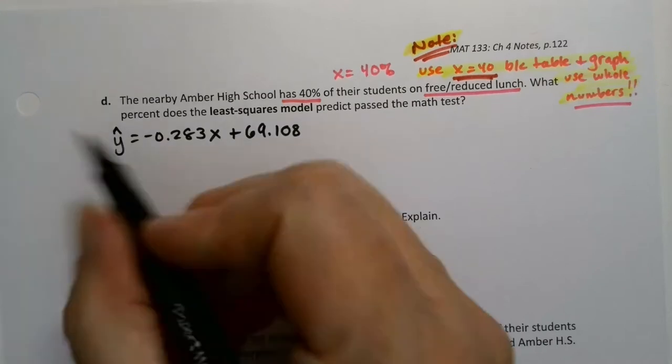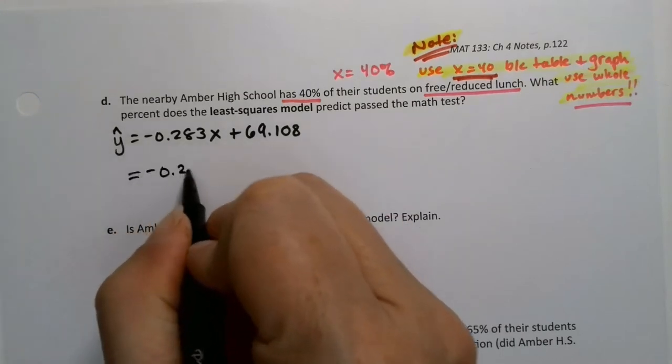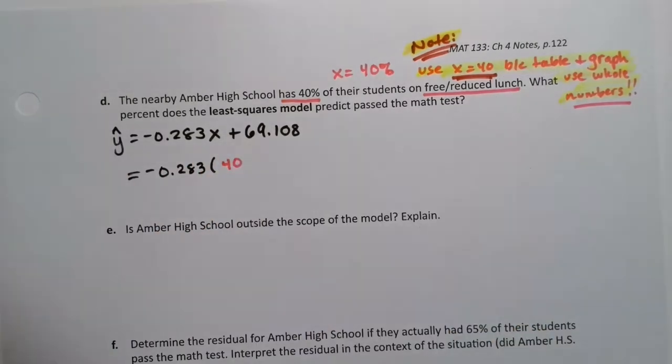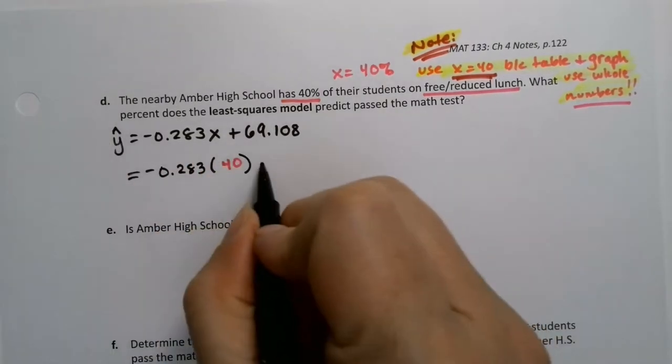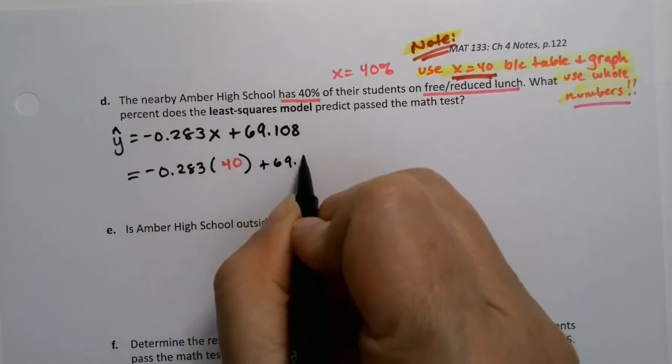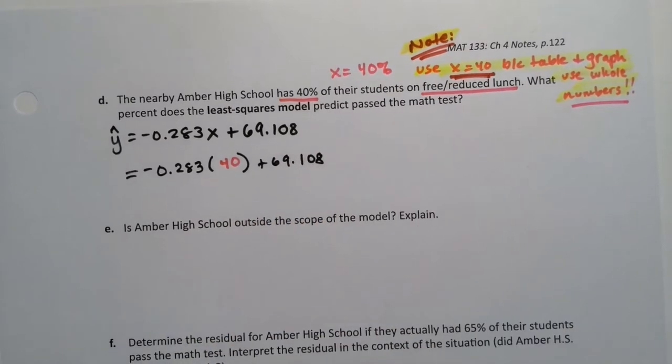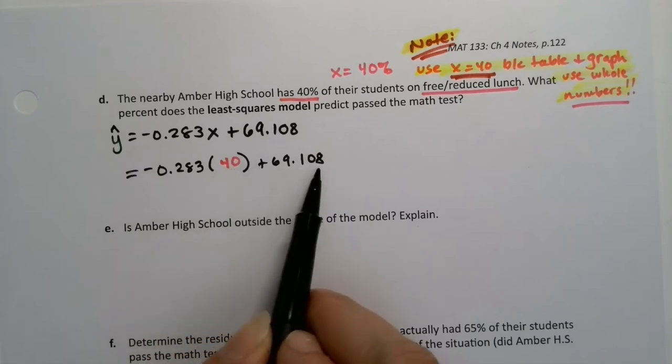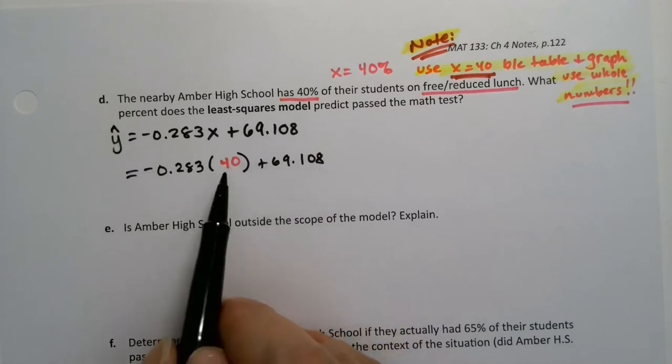So that means that I'm going to go negative 0.283 times 40. Even though it's a percent, mathematically it's just terrible. But that's the way we're going to do this because that's the way the model was built.